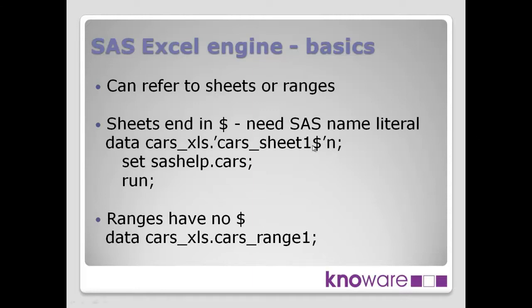So one with a dollar sign is creating a worksheet, and one without a dollar sign is creating a range. Some people get confused when looking at this library in the library window — you'll see two entries for each worksheet. By default, SAS has a range available for each worksheet, so if you have a worksheet called Fred, you'll see Fred$ as the worksheet name and Fred as the range. That range covers the same data as the full worksheet, just known as a range rather than the worksheet.